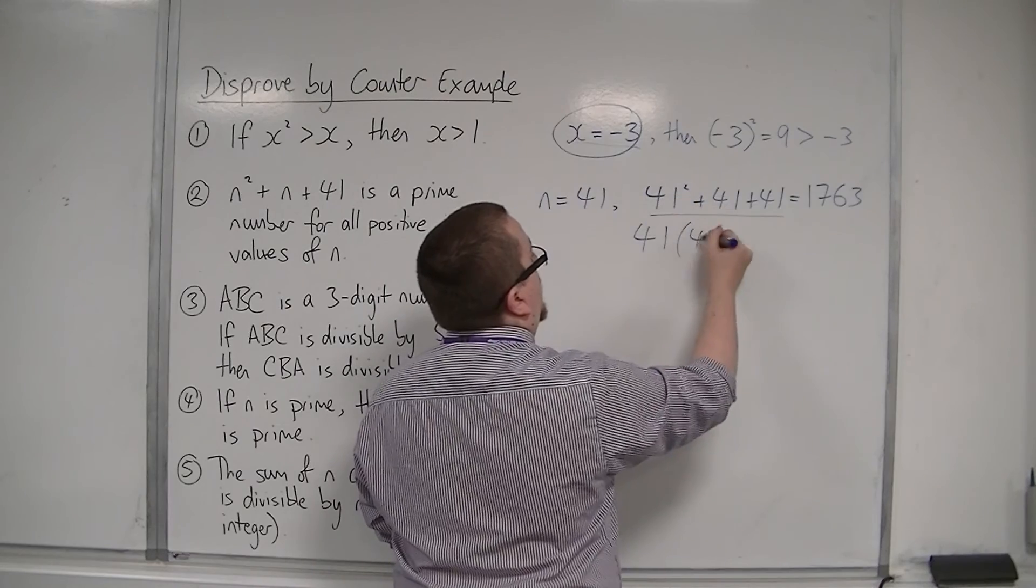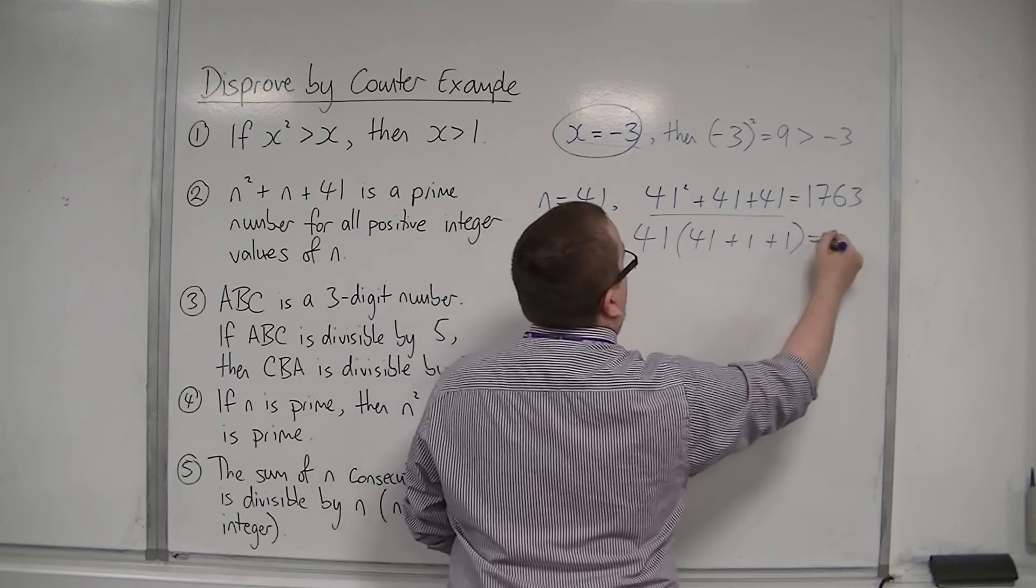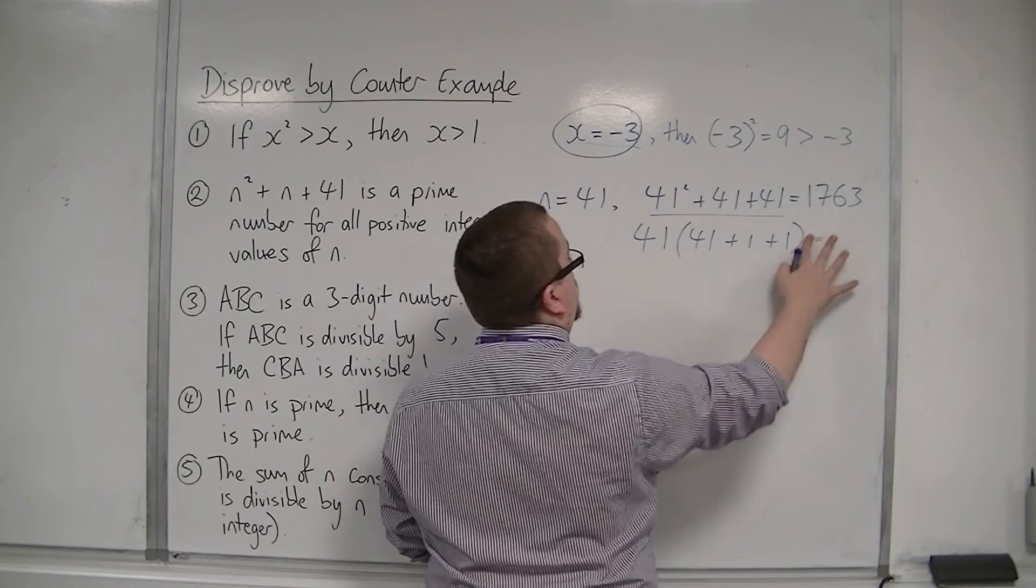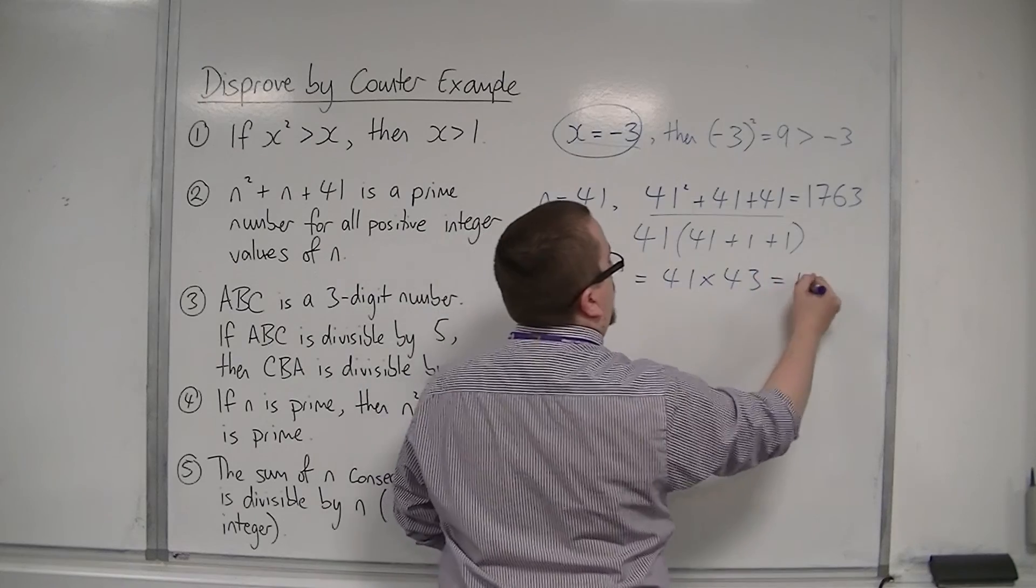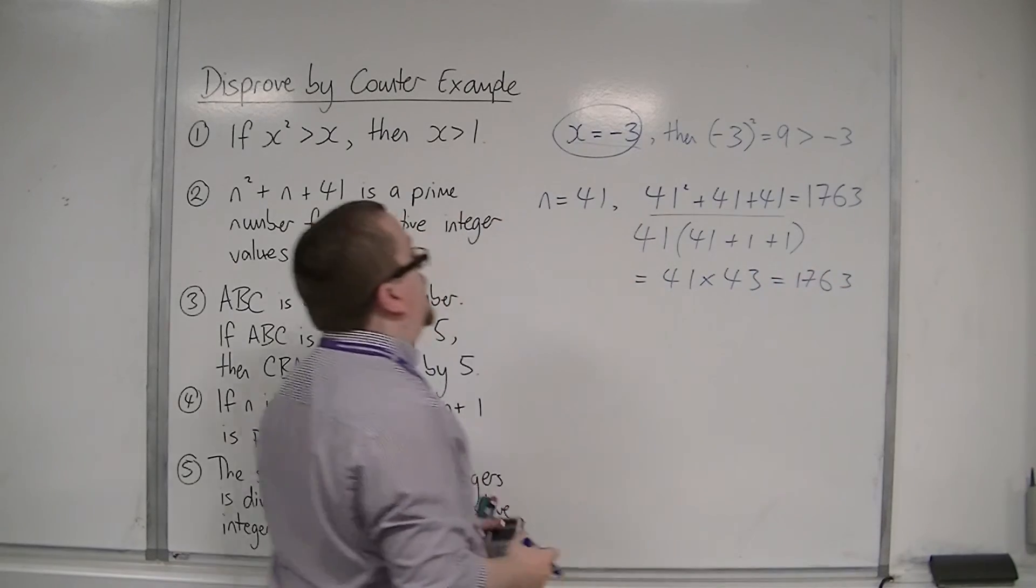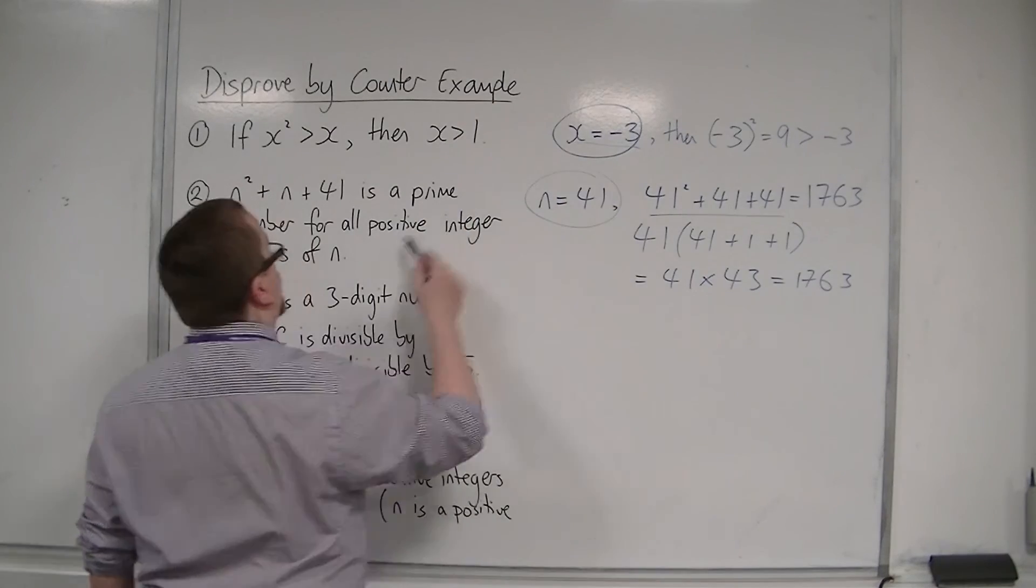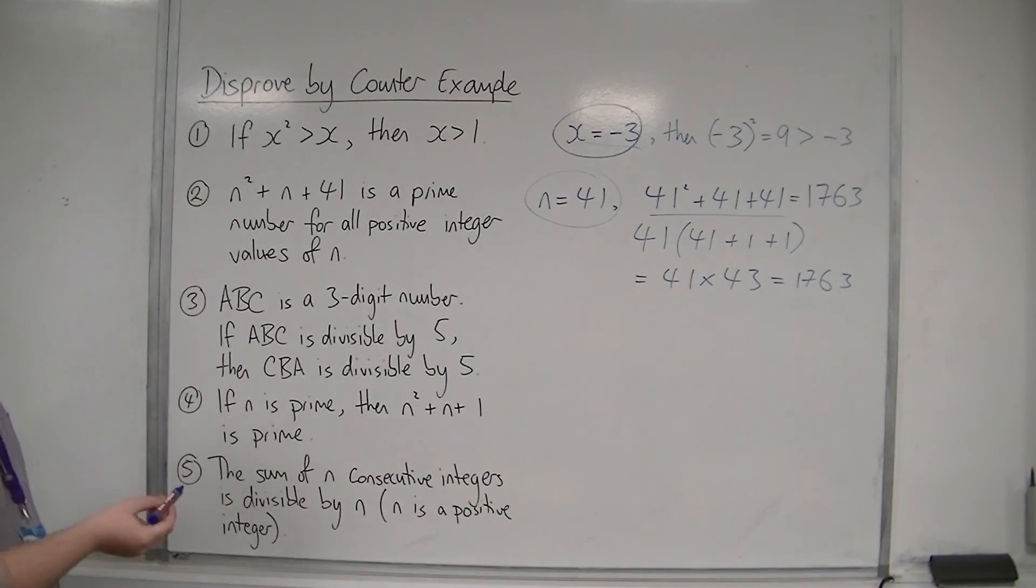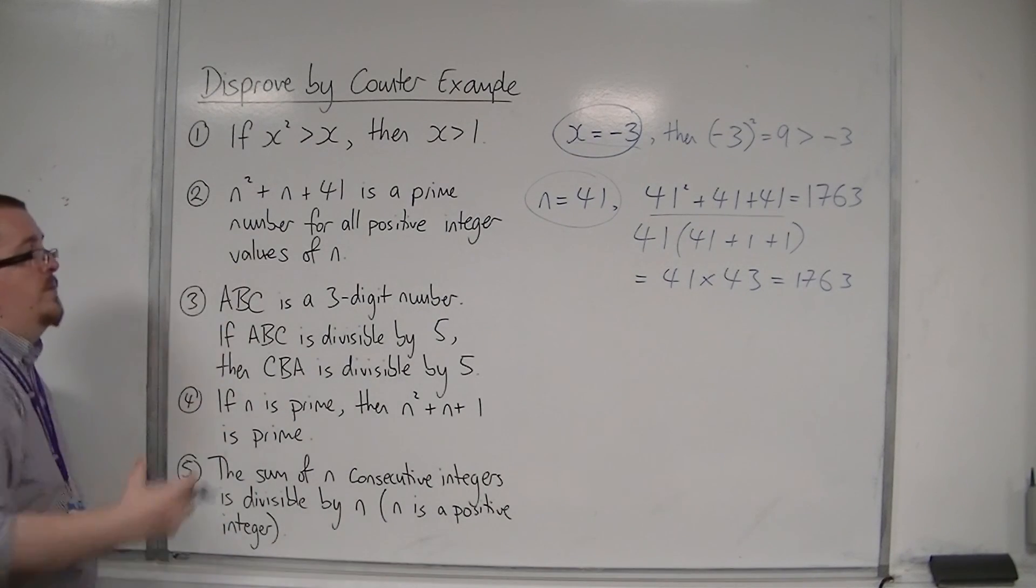So that's 43 times 41, because you can effectively factorise that left-hand side. You could take 41 out of a bracket, then you'd have 41 left there, plus 1, plus 1, is equal to 41 times 43, which is 1,763. So we found a value of n, a positive integer value, where this is not prime, and so this statement falls down.